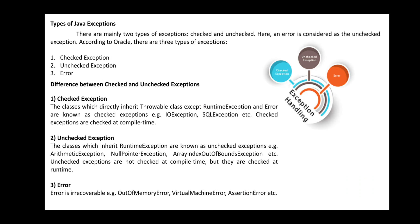There are two main types of exceptions: checked exceptions and unchecked exceptions. Checked exceptions occur at the time of compilation — compile-time errors or syntax errors. Unchecked exceptions occur during program execution, such as arithmetic exceptions, null pointer exceptions, and array index out of bounds exceptions.